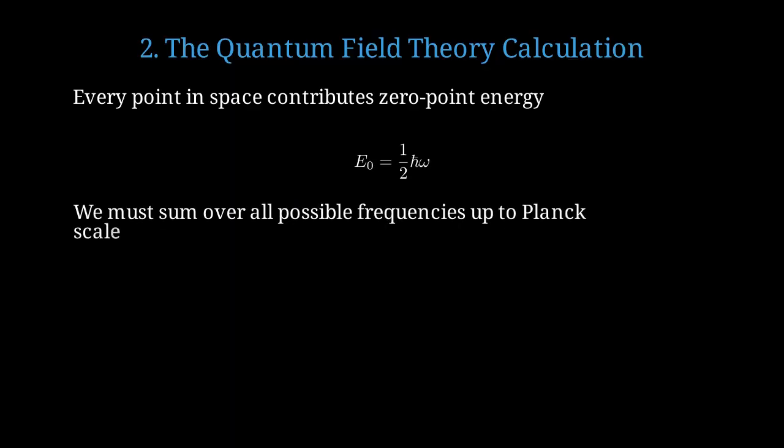To get the total vacuum energy, we need to sum contributions from all possible frequencies, up to the Planck scale, where our physics breaks down. The vacuum energy density is one-half times the integral from zero to Planck frequency of omega times the density of states.